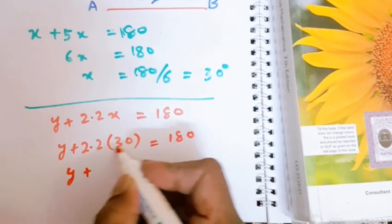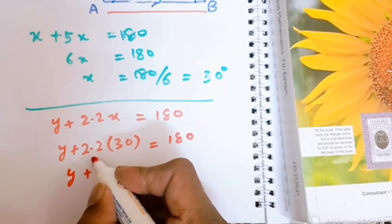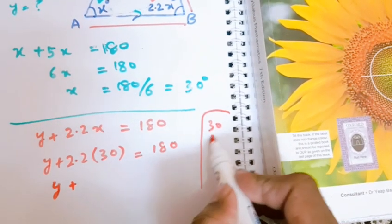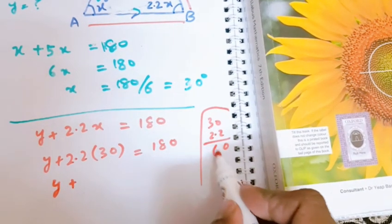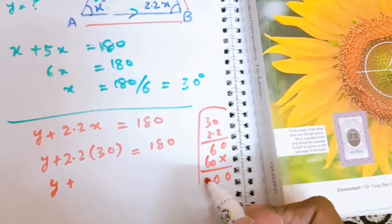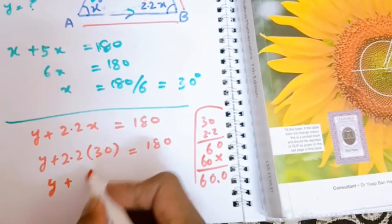So let's put the value of x we just have found, which is basically 30 degrees, and equal to 180 degrees. Y plus 30 times 2.2 will be equal to how much? 30 times 2.2: 2 times 0 is 0, 3 times 6 is 18, 2 times 0 is 0, 3 times 6 is 18, so it will be 66.